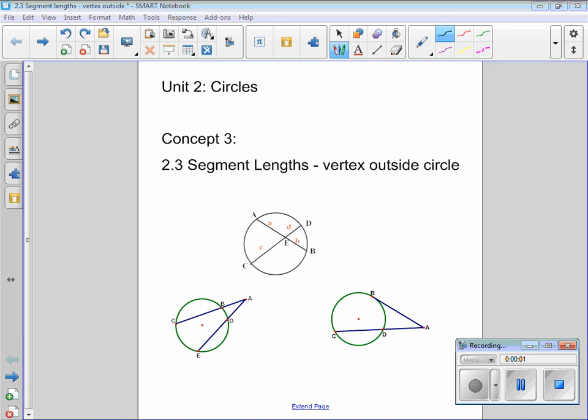Hey everybody, this is Mr. Munson and we're looking at unit two circles continuing with that. Today is concept number three, and if you looked at your student learning map you would see that concept number three is segment lengths vertex outside the circle.